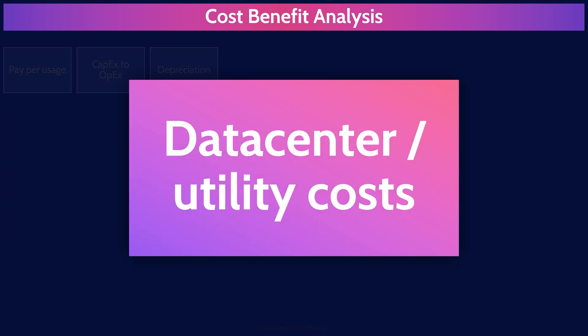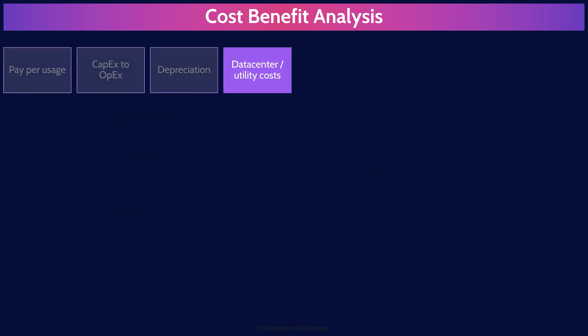Data center and utility costs. Public cloud services eliminate the need for maintaining physical data centers, reducing costs for electricity, cooling, and space as the cloud provider absorbs these instead. So moving everything to the public cloud means an organization doesn't have to pay tons of data center and utility costs — they'll just have a monthly bill for their cloud service provider.